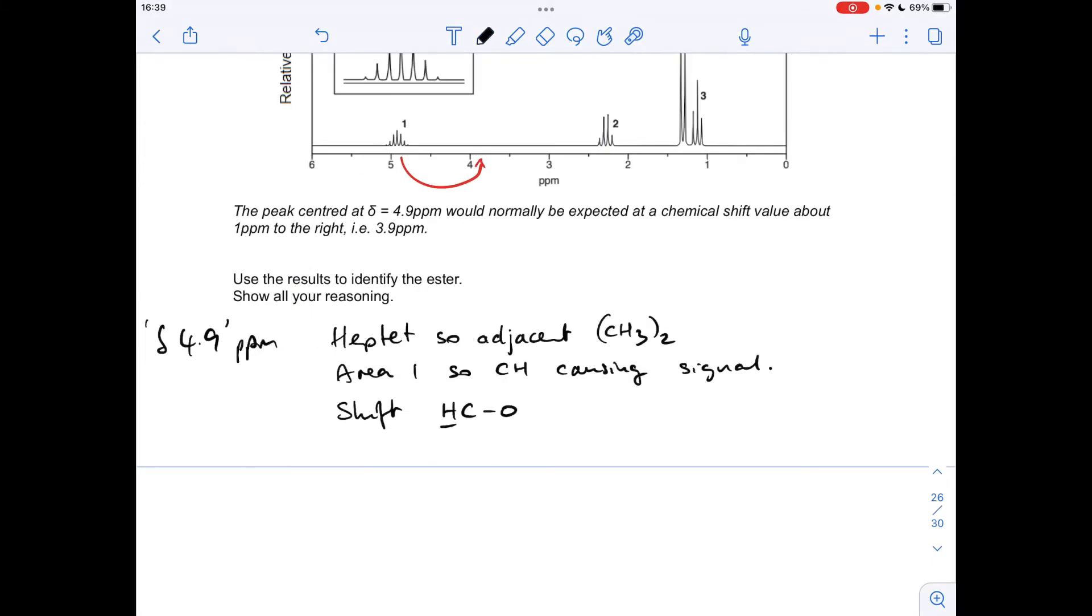So there's all that written down. So we can draw this little part of the ester up now. So we've got a hydrogen bonded to a carbon, singly bonded to an oxygen. Might as well draw the rest of the ester group there. And adjacent to this hydrogen, there are 2 CH3 groups. So that's the whole of the right-hand side of this ester group sorted now, because we can't put anything else on there.